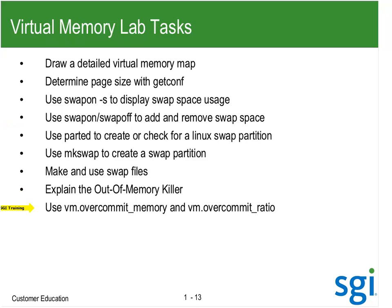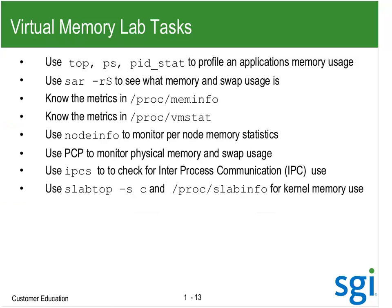We need to talk about over-commit memory. By default, I can over-commit my memory. If you're familiar with IRIX, it had something called virtual swap — if virtual swap is on, you could over-reserve memory. That's essentially the way Windows and Linux run by default. There are two levels: reservation and allocation, and I can over-reserve memory. We'll also profile an application using top, PS, and pidstat to profile how an application's memory is being used.